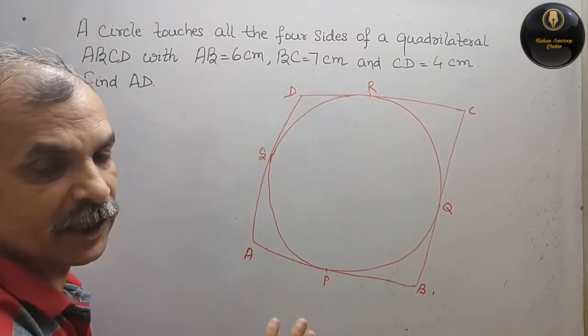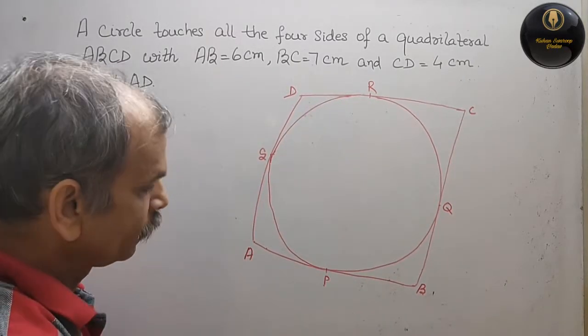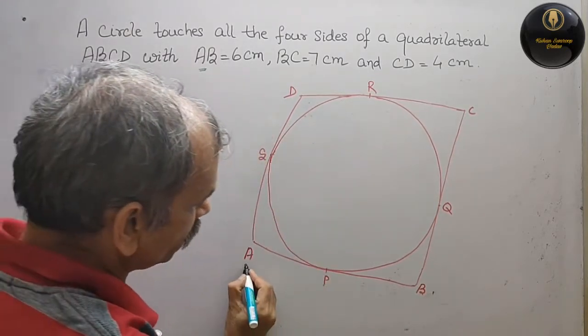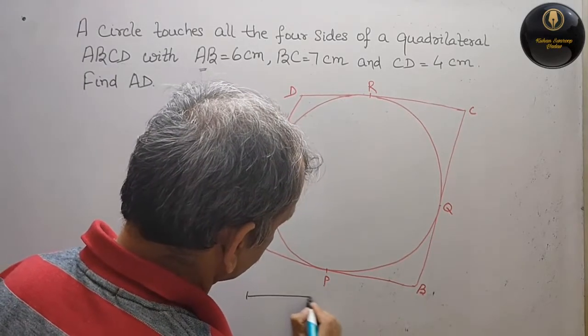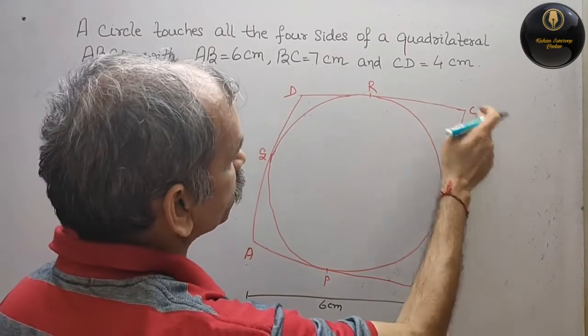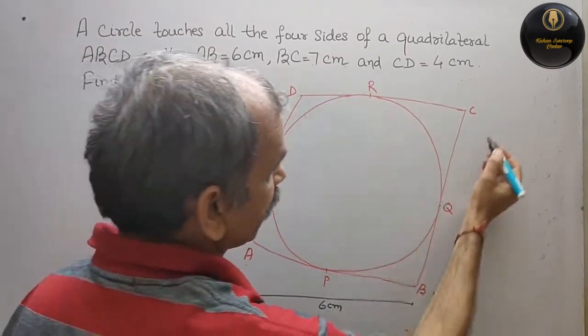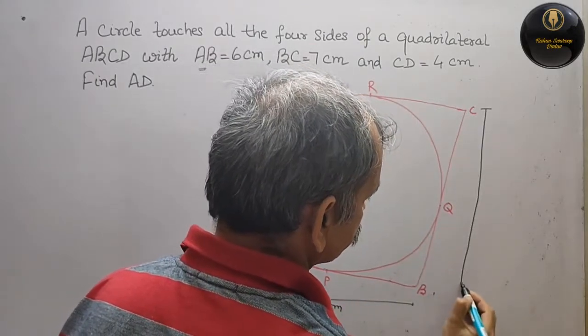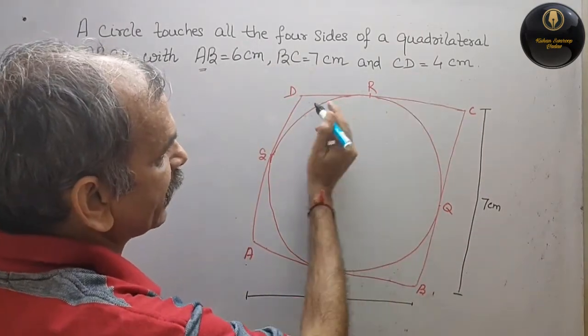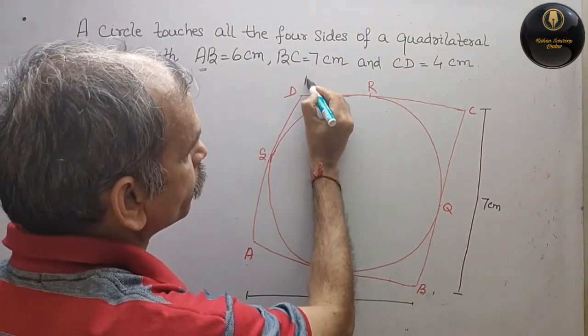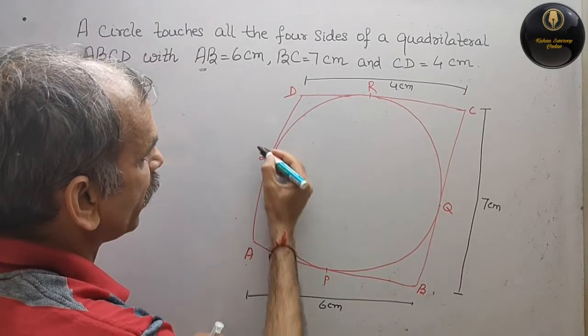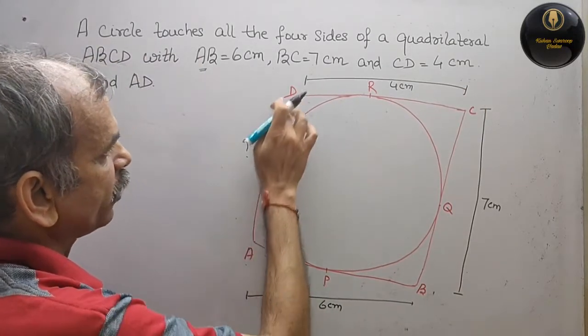Now, this measures we have written. AB is 6 cm, that means from here to here it is 6 cm. Second, BC is 7 cm, from here to here it is 7 cm. Next, he has given 4 cm that is CD, 4 cm, and we have to find out this side, that is your AD.